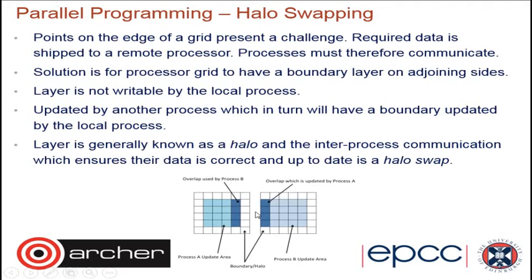Each process gets a subgrid. The parallel version has been implemented using MPI. You launch it with mpirun, or aprun on Archer, and the number of processes you specify determines how many subgrids there are. The points on the edges of the subgrids — each handled by different processors — need to be communicated between neighboring subgrids. So data must be communicated through MPI inter-process communication, using a message passing model.